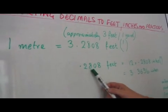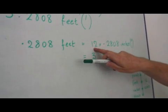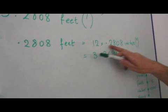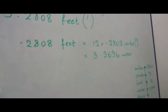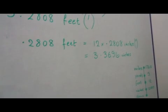Now, 0.2808 feet is 12—the number of inches in a foot—multiplied by 0.2808 inches, which gives you 3.3696 inches.